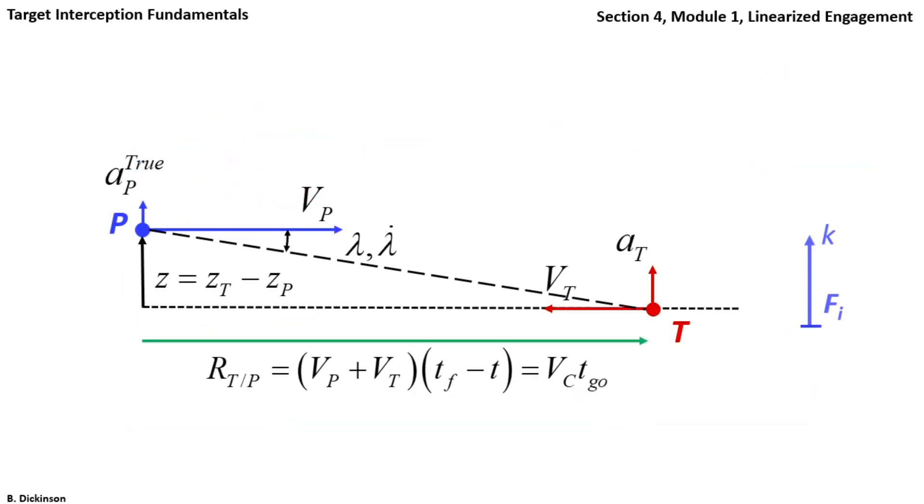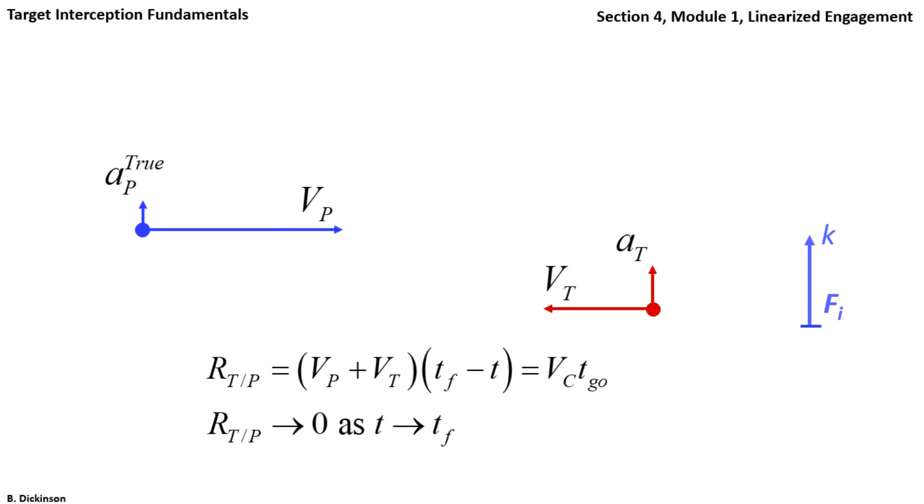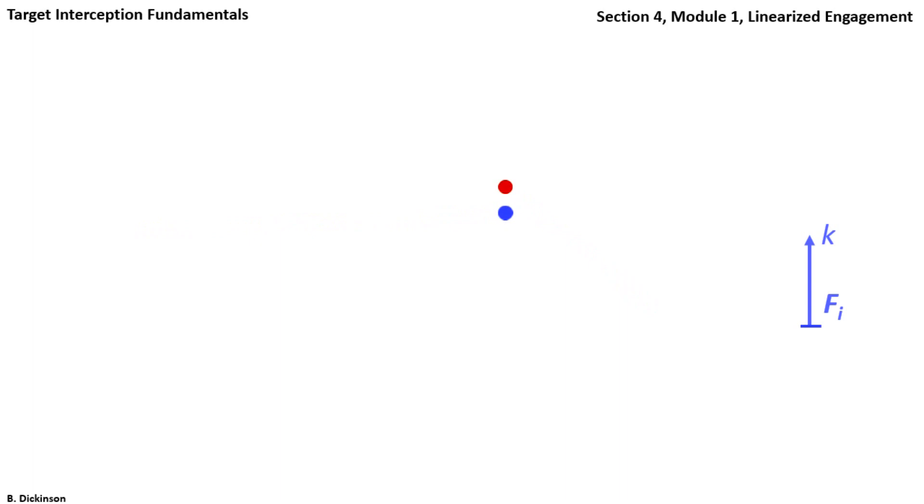Let's visualize this a bit more. The range linearly decreases in time according to the closing velocity. Therefore, the horizontal miss is always zero, because time to go approaches zero as T approaches Tf. As we mentioned, this leaves the kinematics only to the vertical direction. Such that at time to go equals zero, the miss is simply the relative position in the vertical direction between pursuer and target.